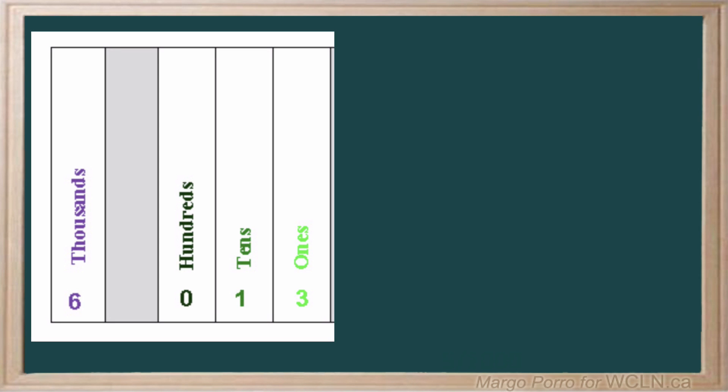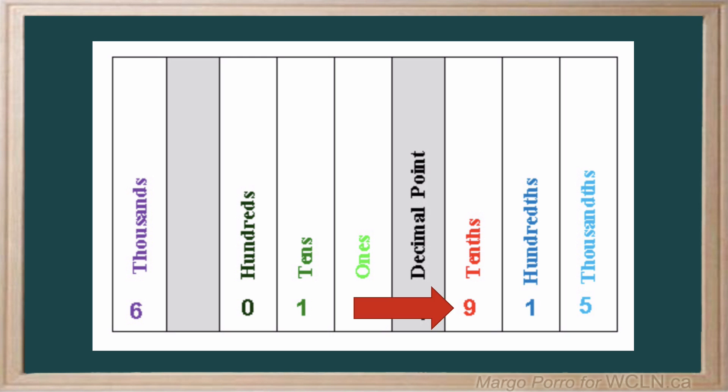A place value chart works well for whole numbers, but we need to expand it to include decimals. Let's take a closer look at the decimal place values, focusing on tenths, hundredths, and thousandths.